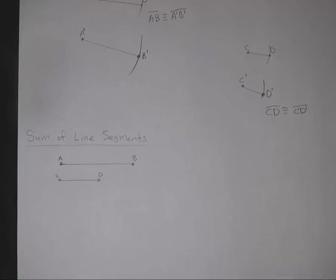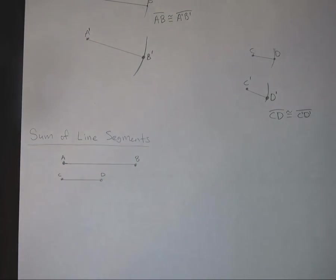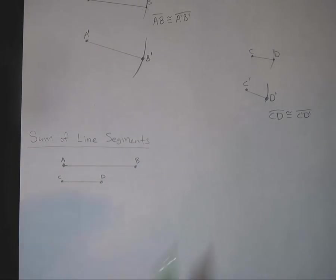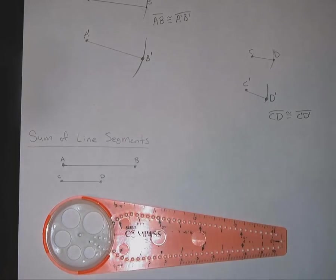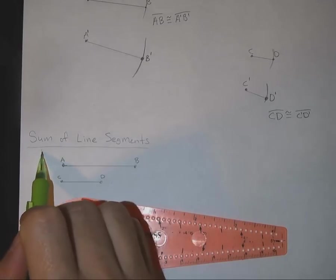All right, so in this lesson we're going to take a look at the sum of line segments. We are going to use a compass to copy these two line segments onto the same line and therefore getting the sum of both of these lines. Remember that sum means to add.